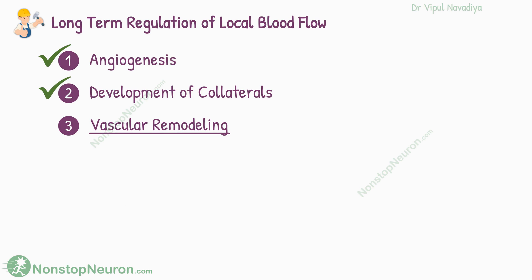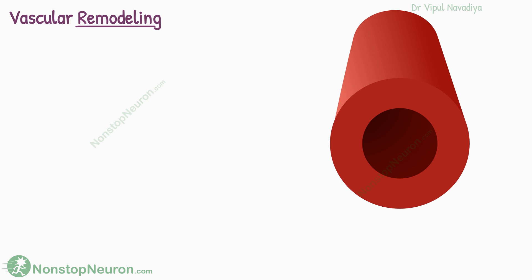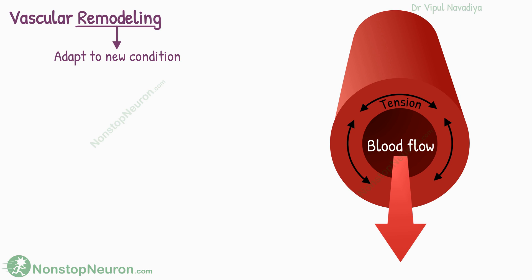Now let's talk about vascular remodeling. If you know about tissue remodeling in general, this is the same thing but in blood vessels. Remodeling is basically changes in tissue to adapt to new conditions. For blood vessels, new conditions mainly include changes in tension in the vessel wall and changes in blood flow in the lumen. Tension depends on the radius of the blood vessel and blood pressure. In general, an increase in wall tension causes hypertrophy and increased wall thickness, allowing vessels to withstand more tension. Changes in blood flow affect the diameter of the vessel, allowing it to accommodate the flow as needed.